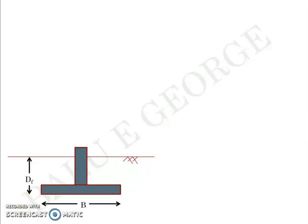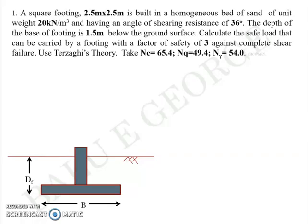The first question: you have a square footing 2.5 by 2.5 meters in plan, built on a homogeneous bed of sand with unit weight 20 kN/m³ and φ = 36 degrees. It is located 1.5 meters below the ground surface. You are asked to calculate the safe load that can be carried by the footing with a factor of safety of 3 against shear, using Terzaghi's equation with Nc, Nq, and Nγ. Values are given in the question.